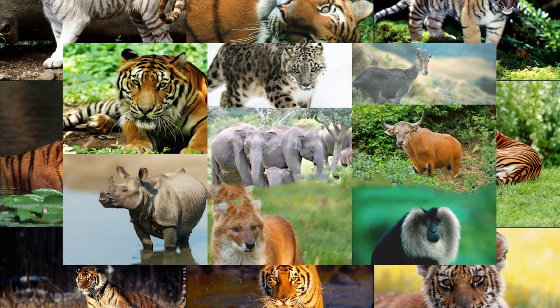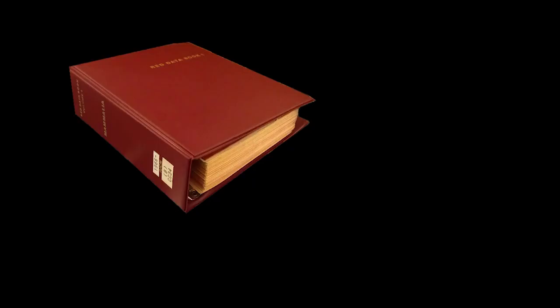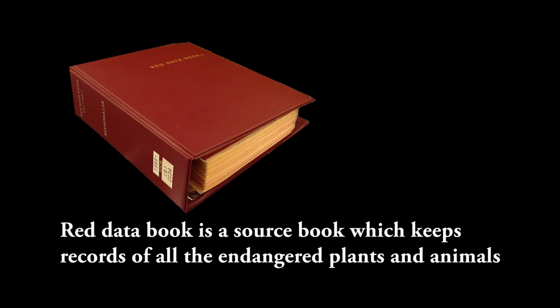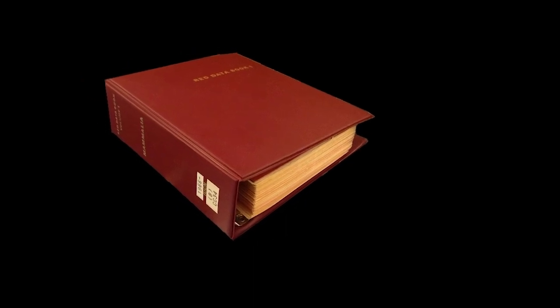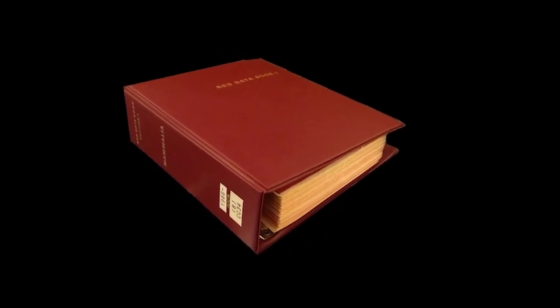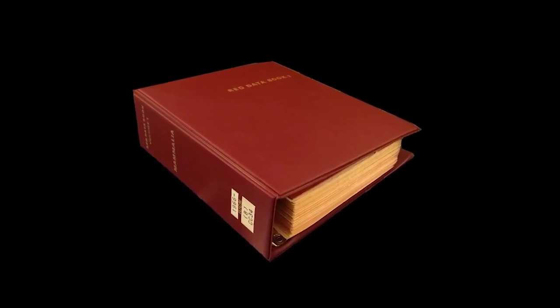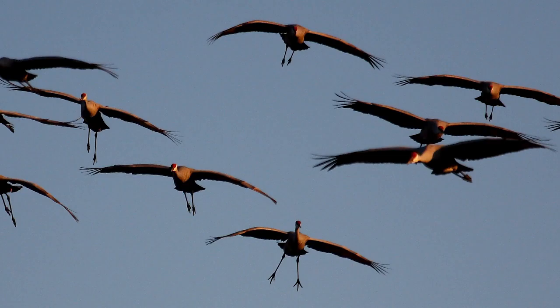The Red Data Book is a source book which keeps a record of all the endangered plants and animals. We can find out which organisms are diminishing in number through this book.